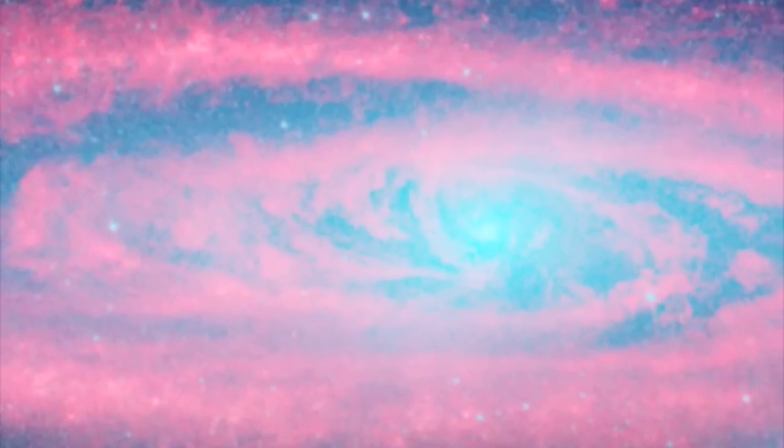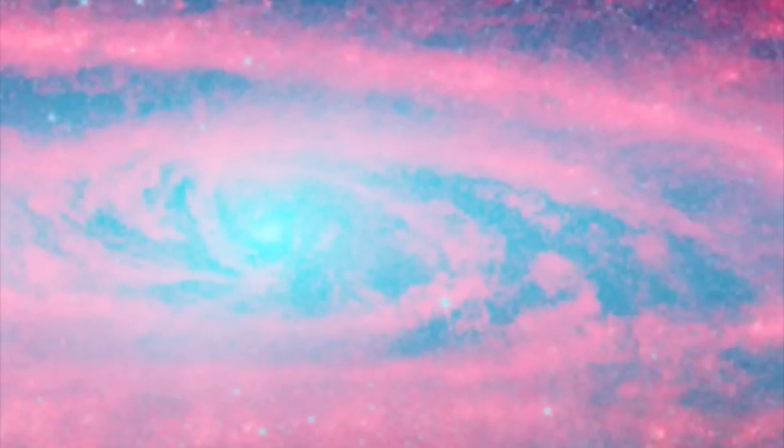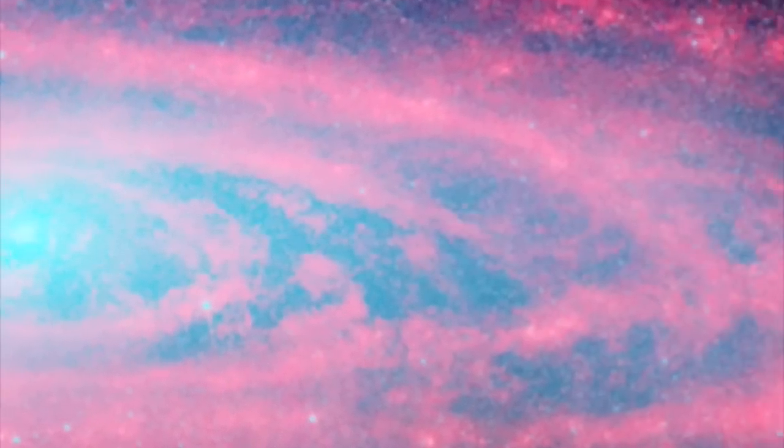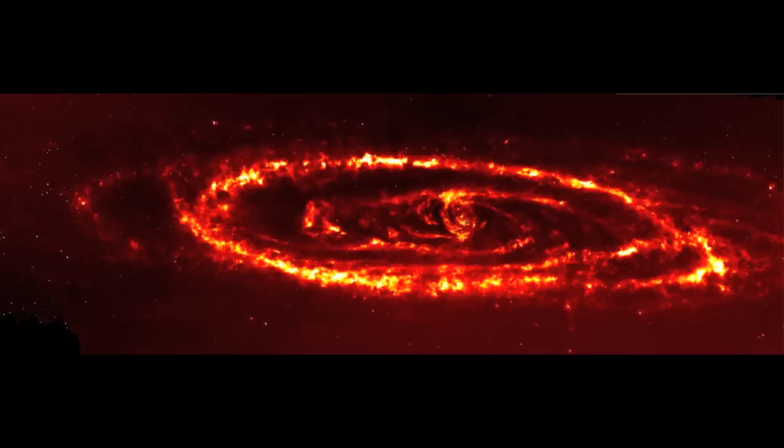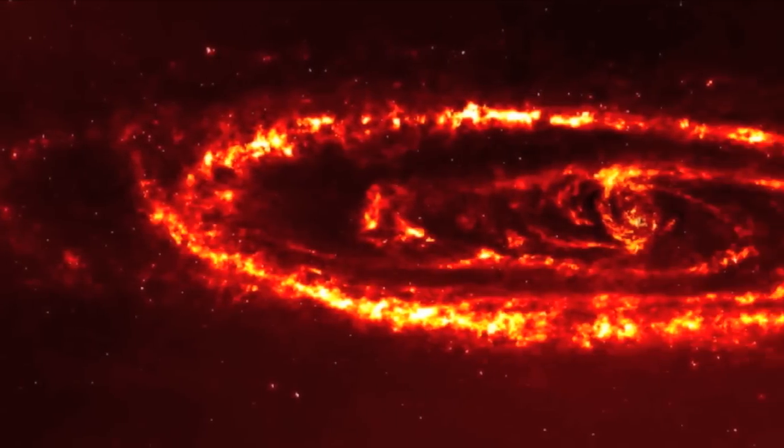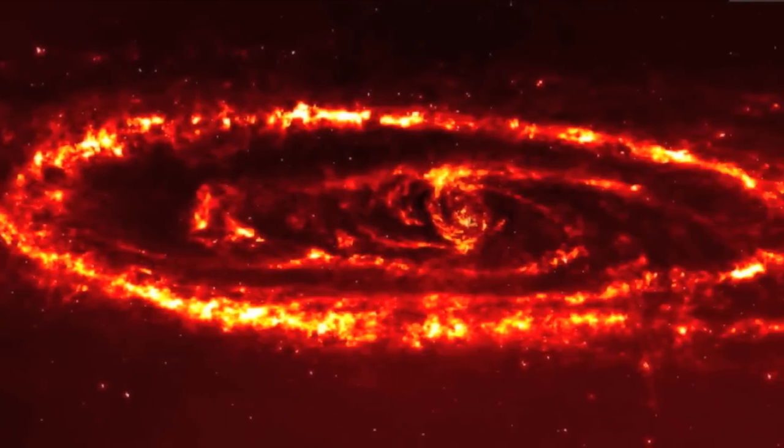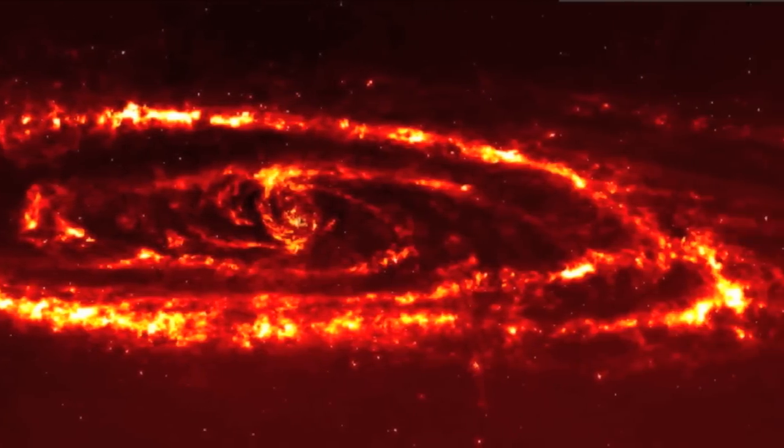Galaxies look much different when viewed by the heat given off by interstellar gas and dust. Here is what the Andromeda Galaxy looks like in the infrared. The embers of the dust and cool gases shine brightly, yielding detail that would otherwise escape our notice.